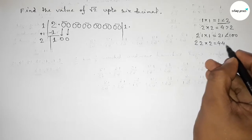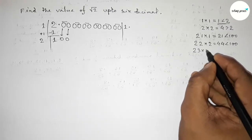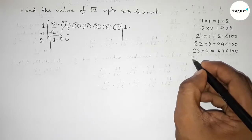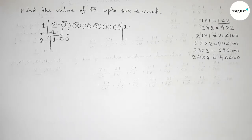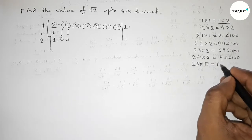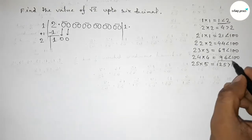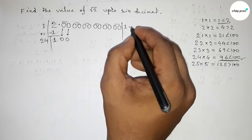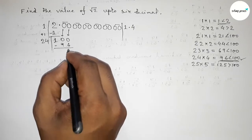21 times 1 equals 21, which is less than 100. If you take 3 and multiply, 23 times 3 equals 69, which is less than 100. If you take 4 and multiply, 24 times 4 equals 96, which is less than 100 and almost near to 100. If you try 5, 25 times 5 equals 125, which is greater than 100. So we take 4. Write 24 times 4 equals 96. Subtracting 100 minus 96 gives 4.